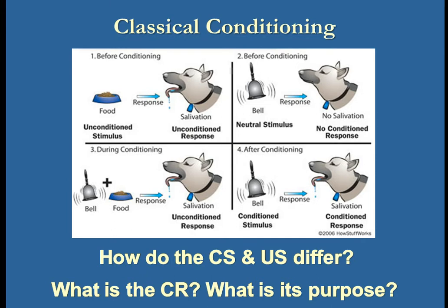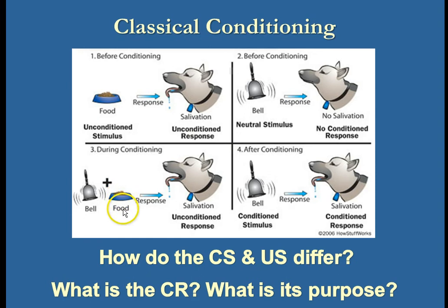Now I want to compare that to what is known as a neutral stimulus, like a bell. A bell, unless rung very loudly, isn't going to trigger any kind of response. Initially, the bell had no value at all to the dog. But what Pavlov was doing is every time he or a research assistant would go in to give the dogs food, they would ring a little bell. In this way, the bell was a reliable predictor that the dog was about to get food.